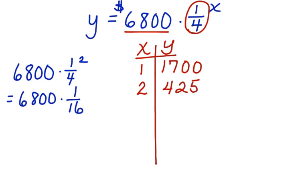You can see that this number, the 6,800, is decreasing exponentially as the days go by. Now, let's look at one more day. What would happen on day three?